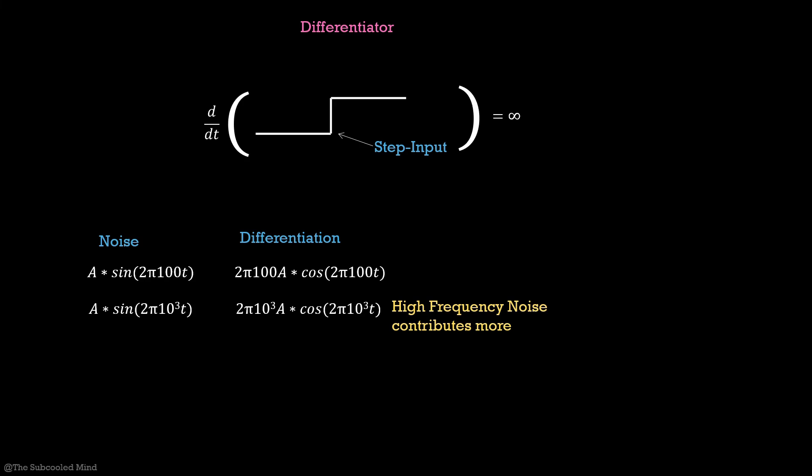And any noise signal can be broken into sum of sinusoids. But what if I can reduce the value of a, then I can minimize the contribution of high frequency noise. I can do that using a low pass filter which should attenuate all the high frequency components. This is exactly how a differentiator would be implemented in real world applications.